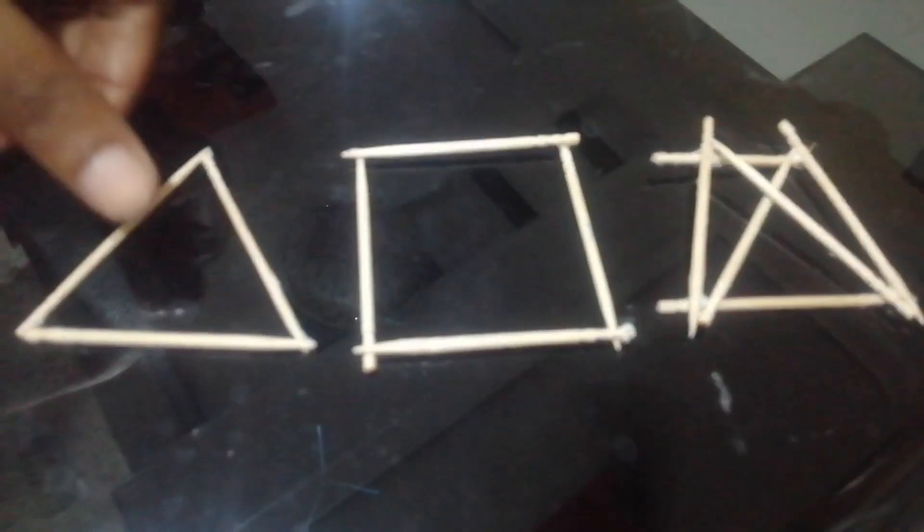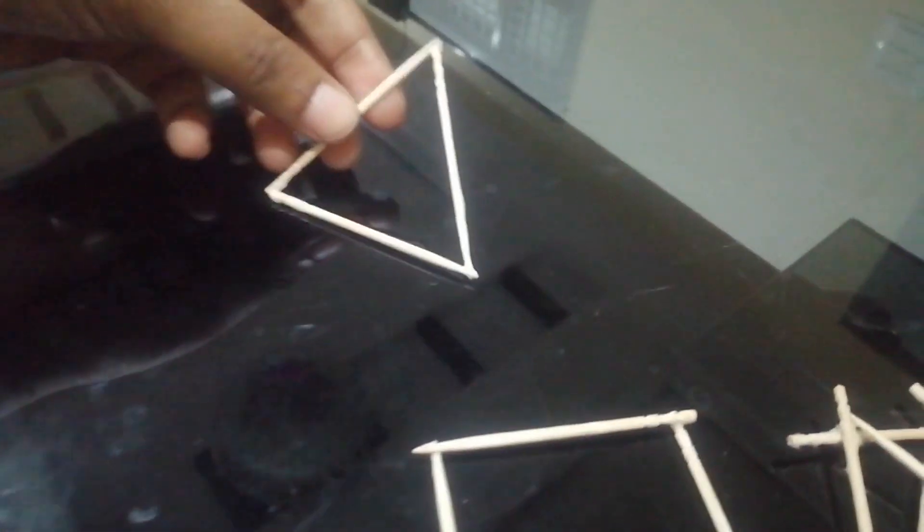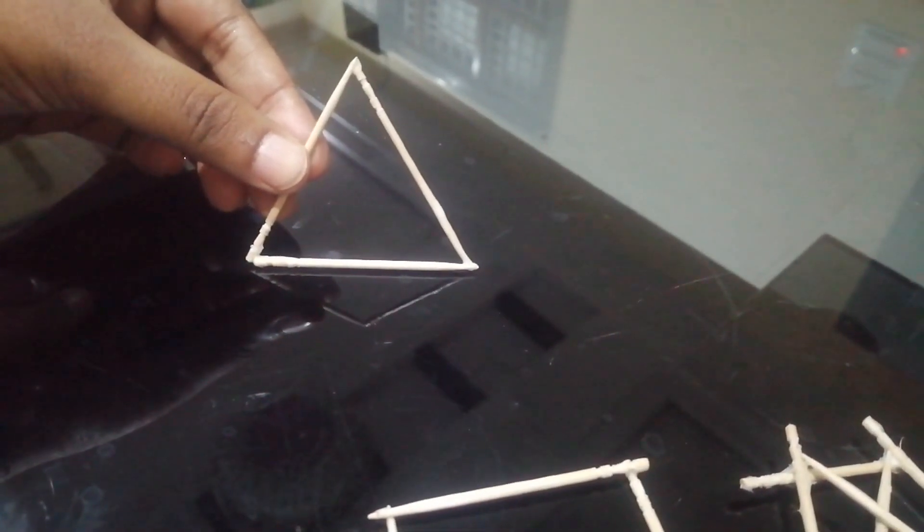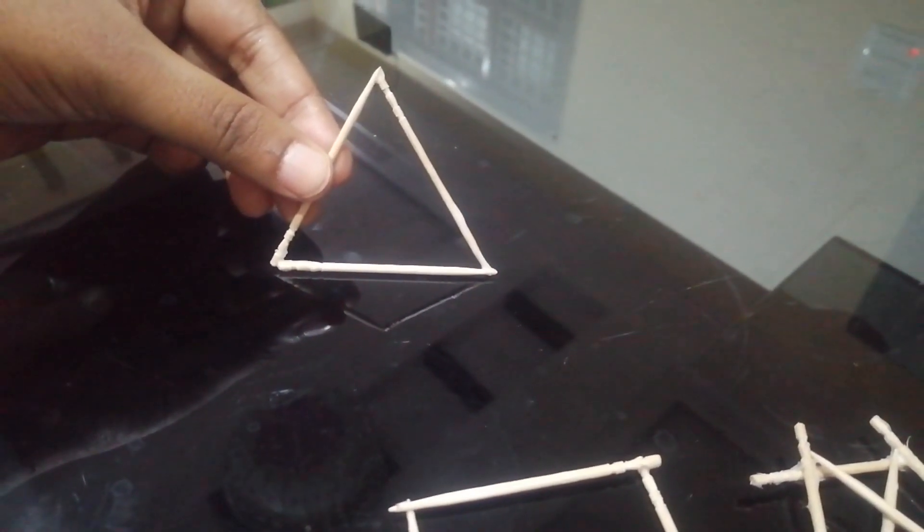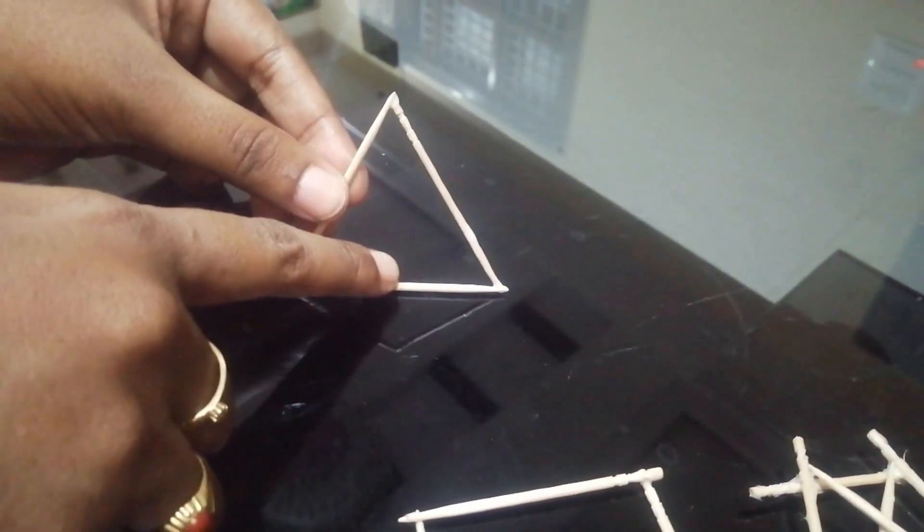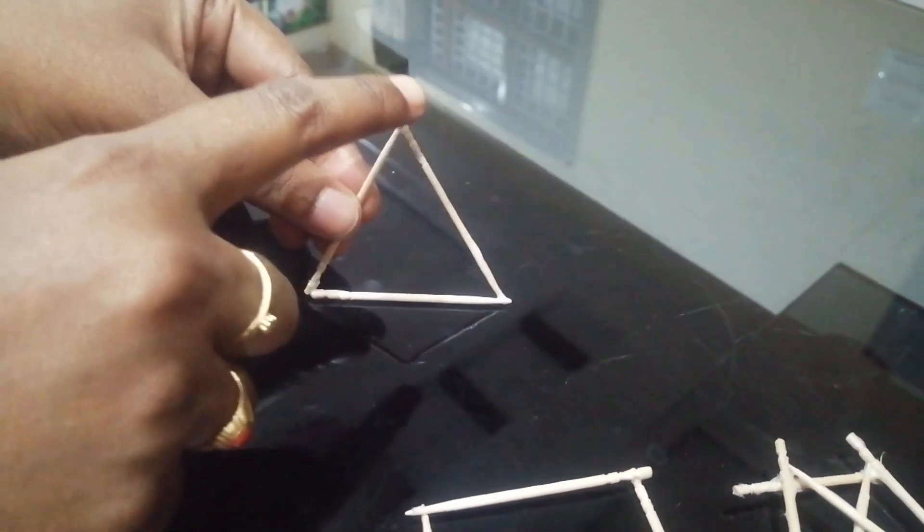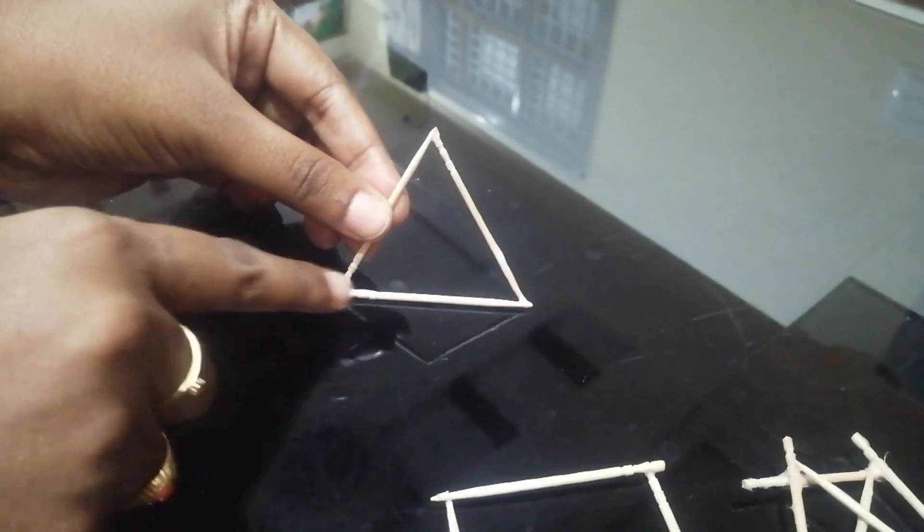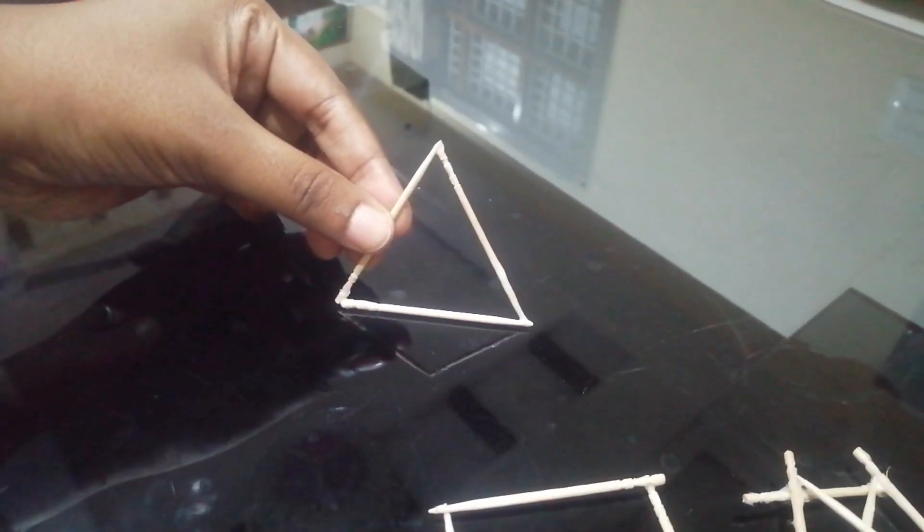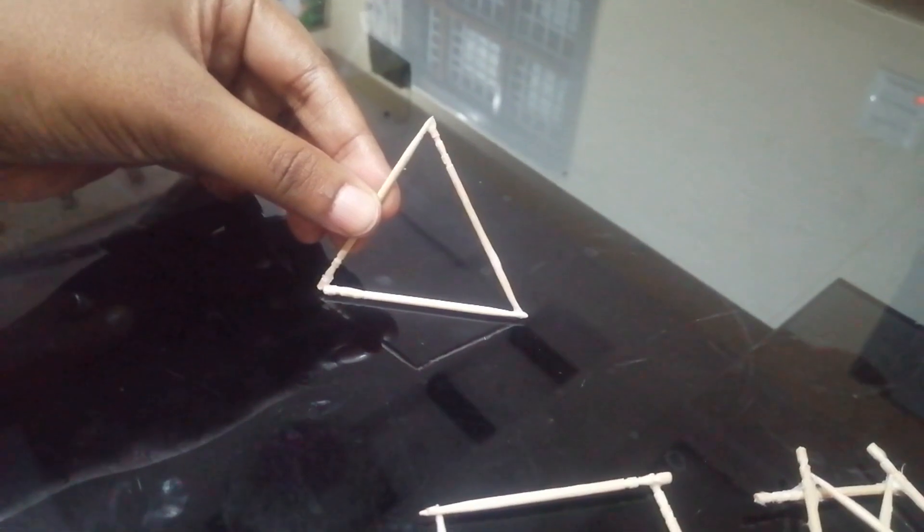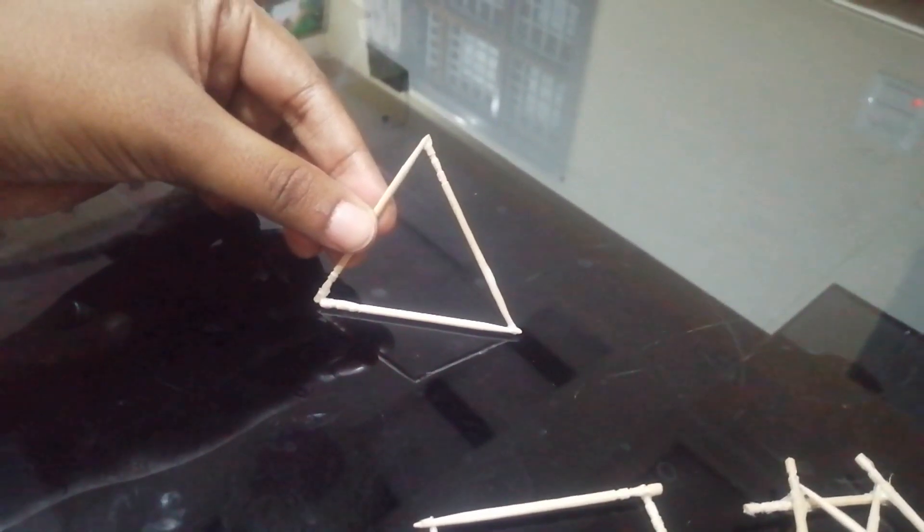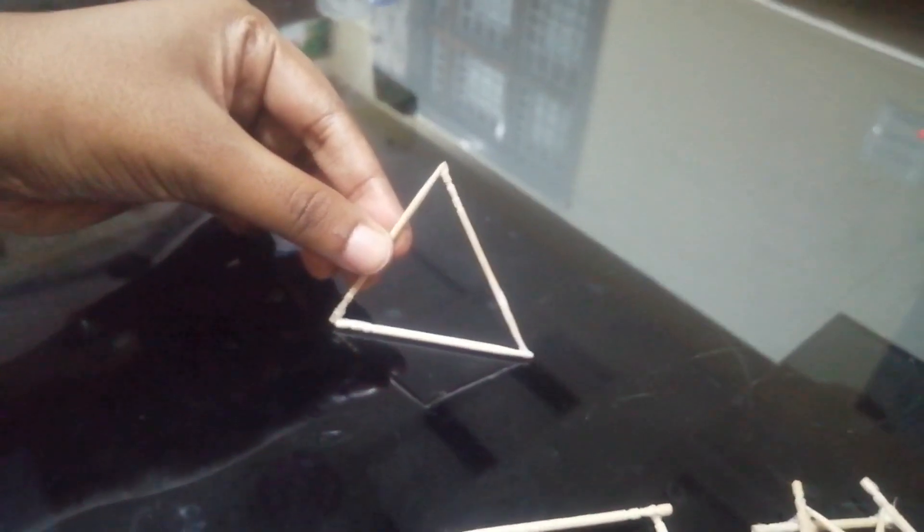See this triangle which is said to be a perfect frame. Let us check whether it is perfect or not. Here, we have 1, 2, 3, 3 members and 1, 2, 3, 3 joints. So, by substituting M equals 3 and J equals 3, the equation M equals 2J minus 3 is satisfied and it is a perfect frame.